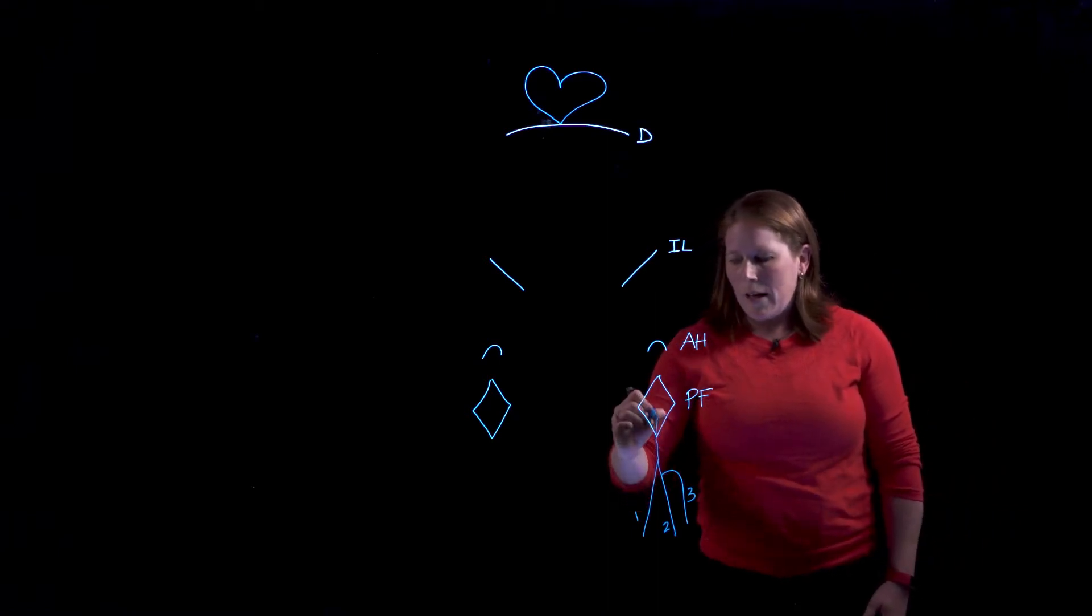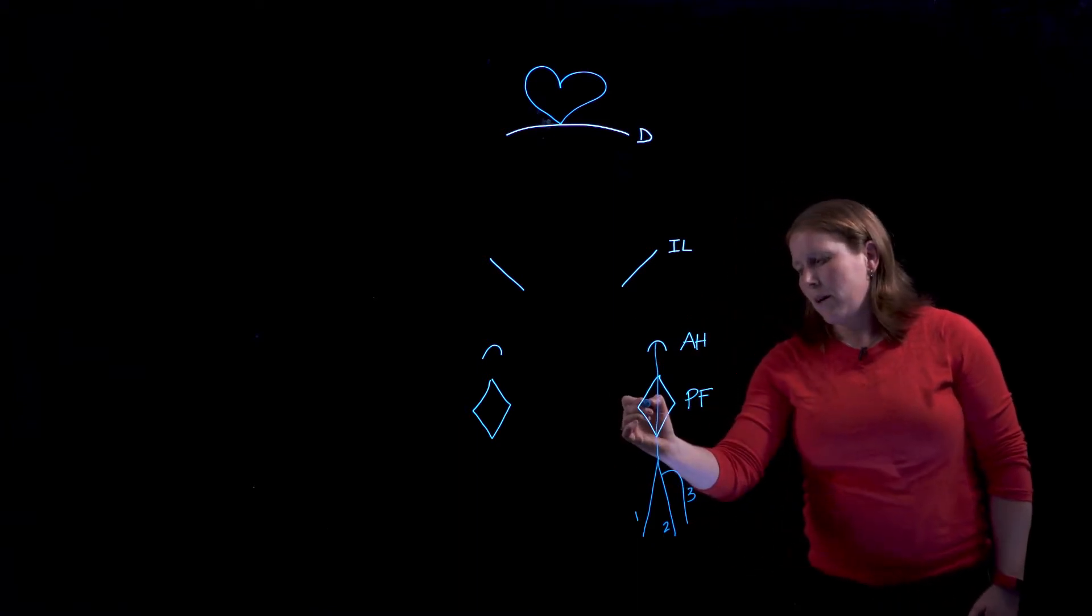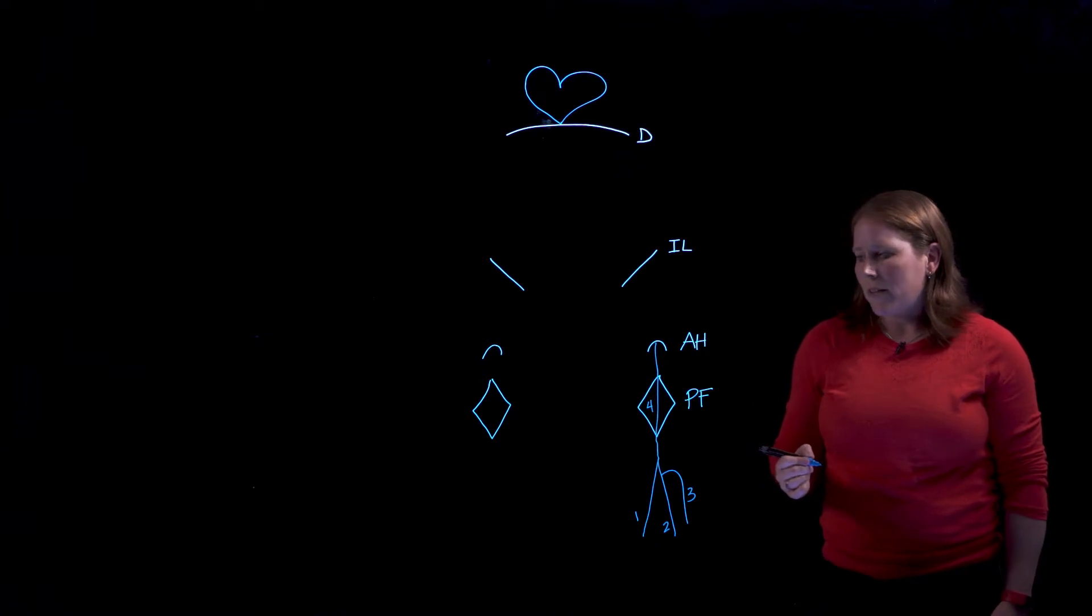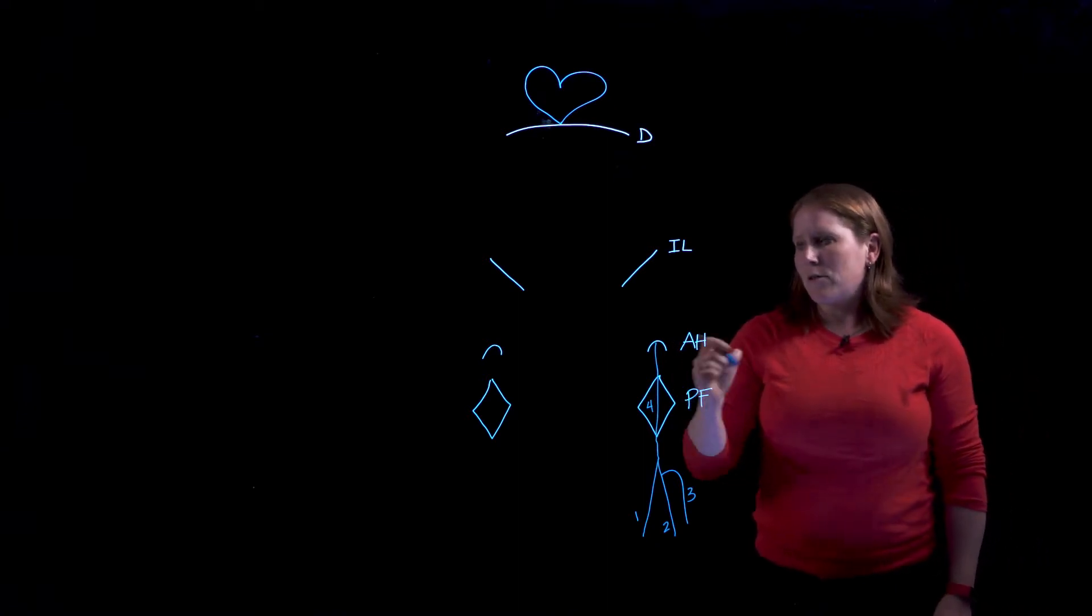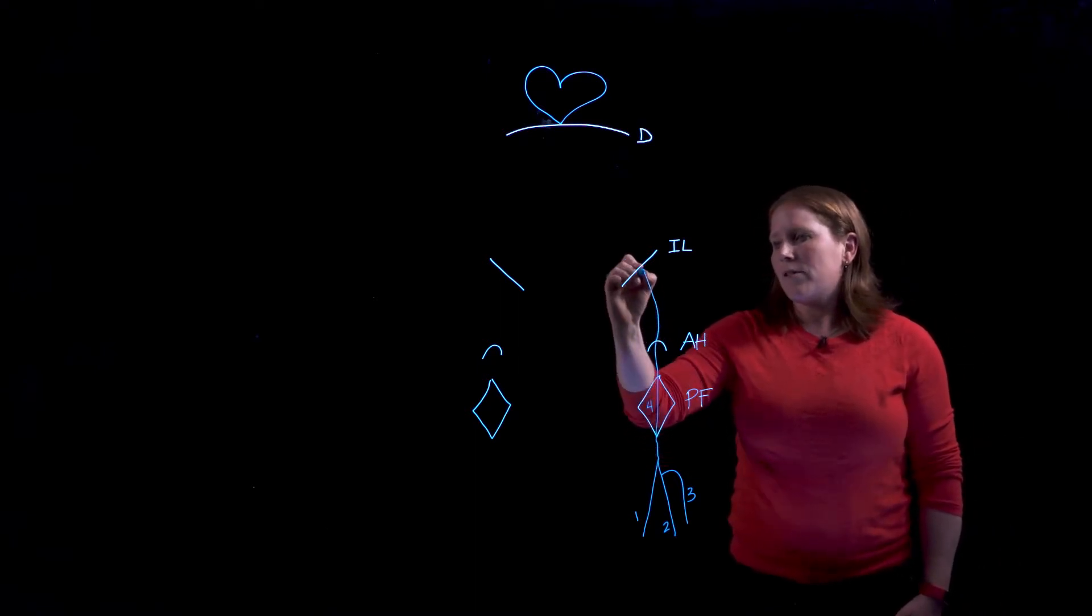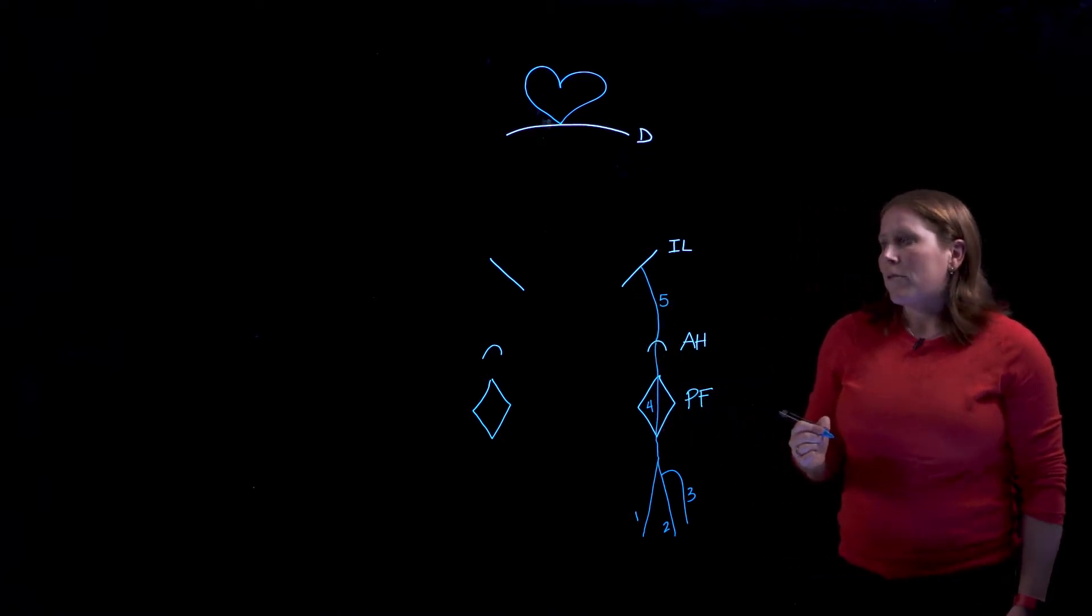As these unite they'll pass through the popliteal fossa and become the popliteal vein. Now the popliteal vein is found in the posterior aspect of the knee but as it passes through the adductor hiatus it will become anterior and in the anterior thigh this vessel is now called the femoral vein.